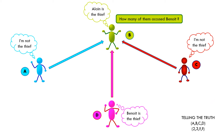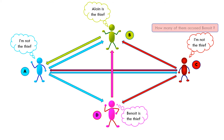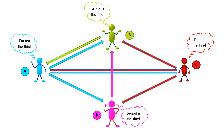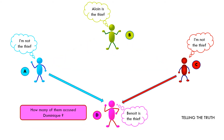For Charlie, only one arrow is pointing at him, so only one person is accusing him. For Dominic, there are two arrows, so two people are accusing Dominic for the theft.